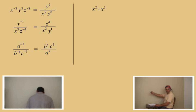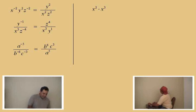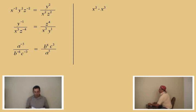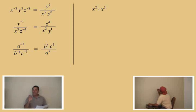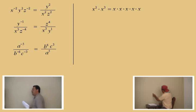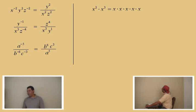Let's work with some exponents. X squared times x cubed. The rule says when you're multiplying with the same base, you add the exponents. Let's think about why: x squared means x times x, and x cubed means x times x times x. So you basically have five x's being multiplied together. So what's our answer, Charlie? X to the fifth. Very good.